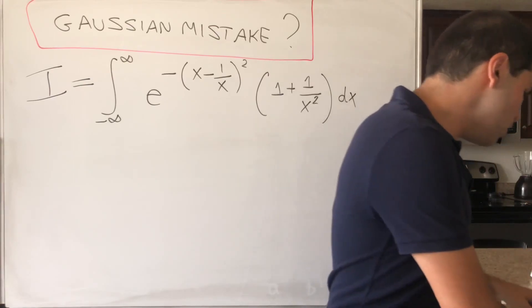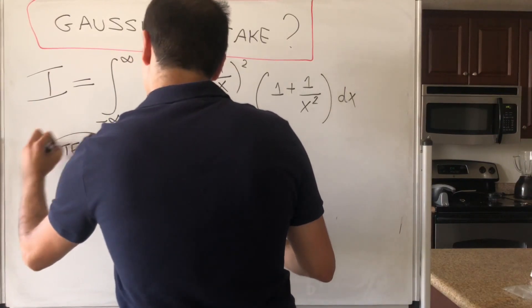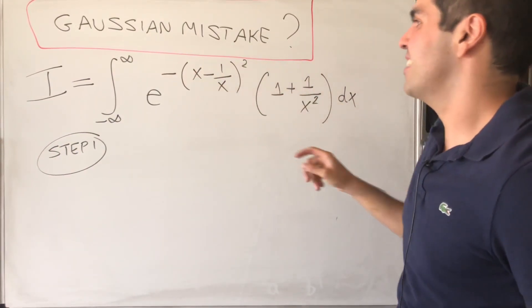So step one, let's just apply the u sub because this just screams to be used. x minus 1 over x, so u equals x minus 1 over x.